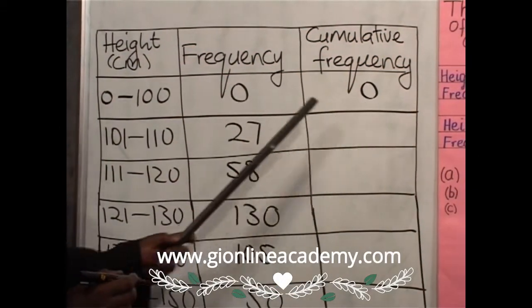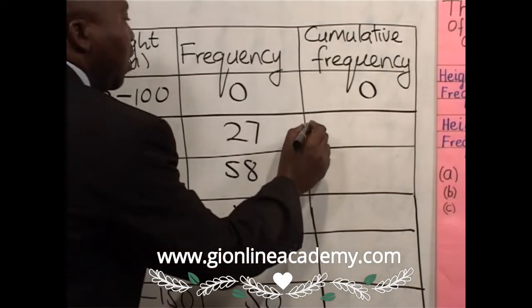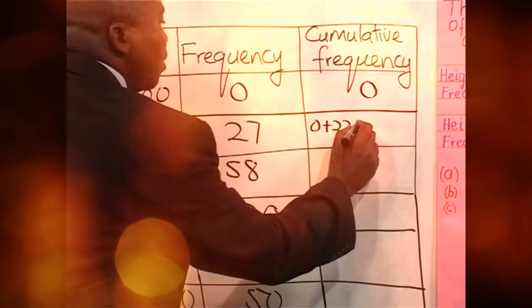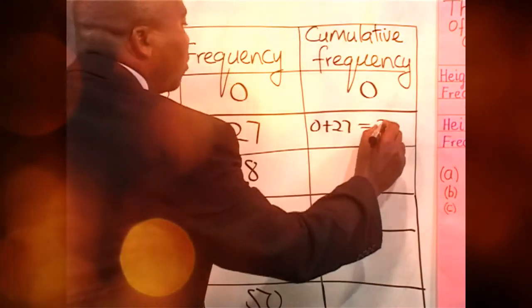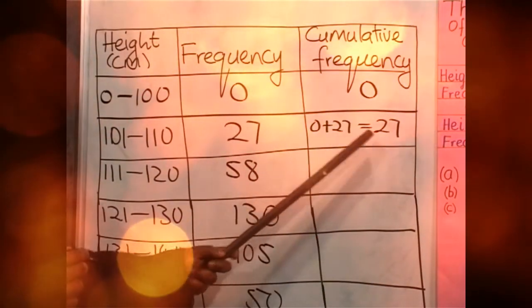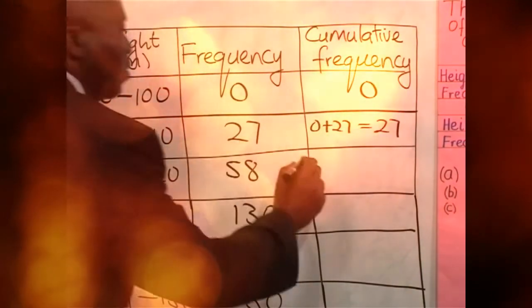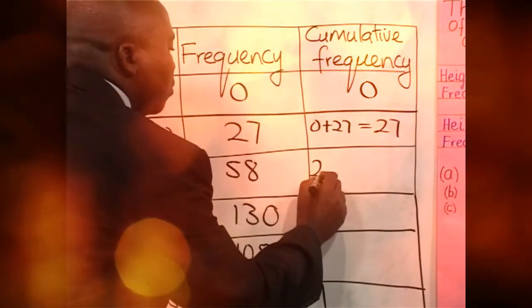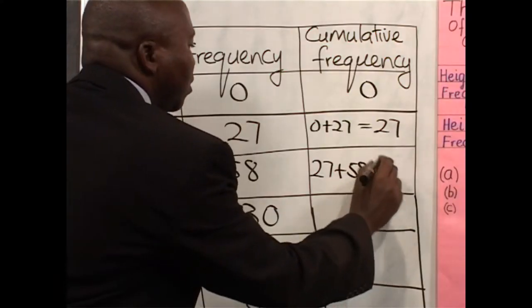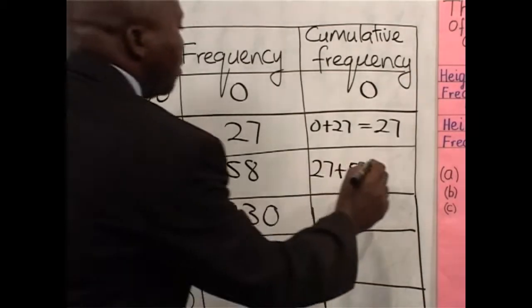This 0 will be added to 27. So you say 0 plus 27. The answer, of course, is 27. Then you take the 27 plus 58. So 27 plus 58, the answer there will be 85.